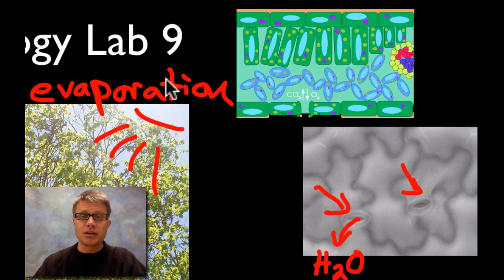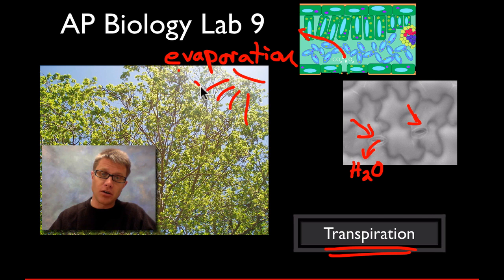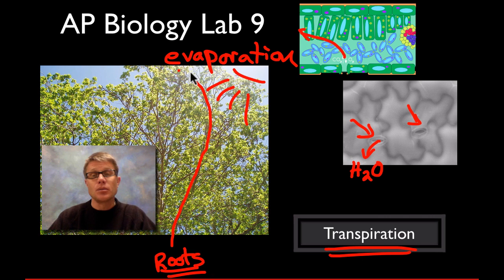As it evaporates up here, and again the sun is providing the energy, there's going to be a tube that goes all the way from here back through the xylem all the way down the tree, all the way down into the roots. There's this connected tube of water all the way up to the top. As the water evaporates off the leaf this whole column is going to move up because all those water molecules are attracted to each other because of hydrogen bonding.